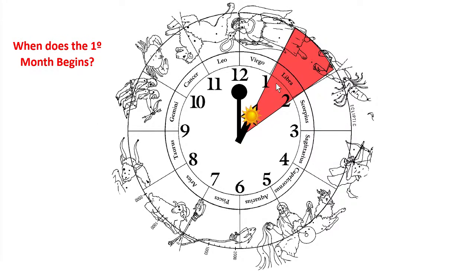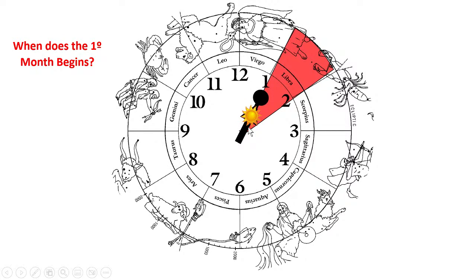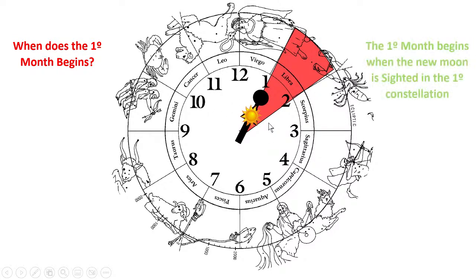Libra is the first constellation, the first month. The Moon will go through all the constellations and reach the Sun again — that's the new Moon, when the Sun and Moon are together pointing the first month. So the first month begins when the new Moon is sighted in the first constellation. That's basic knowledge, very important for everybody to understand how a clock works and how the constellations and sky clock work.